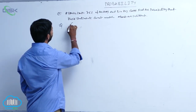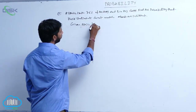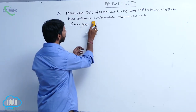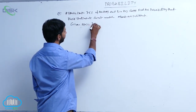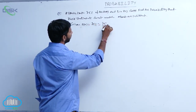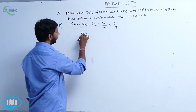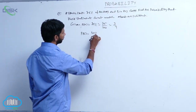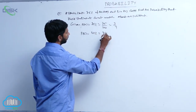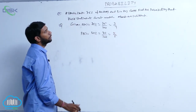Given the probabilities: P of A is equal to 75%, that is 75 by 100, which equals 3 by 4. And P of B is equal to 80%, that is 80 by 100, which equals 4 by 5.